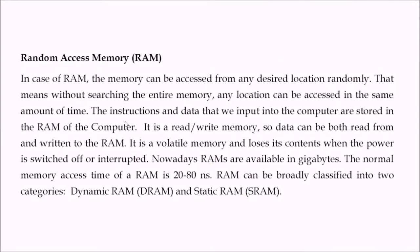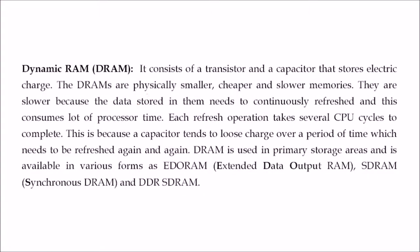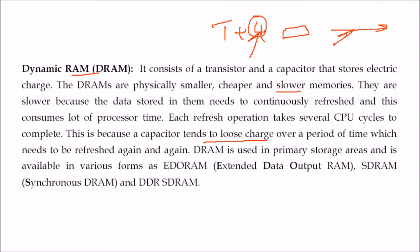Dynamic RAM consists of a transistor and capacitor — the electric charge stored represents ones and zeros. DRAMs are smaller, cheaper, but slower. They are slower because capacitors tend to lose charge over time and need to be refreshed again and again. CPU cycles are spent refreshing, which makes DRAM slower. DRAM is used in main storage and is available in forms like EDO RAM, SDRAM (synchronous DRAM), and DDR SDRAM.